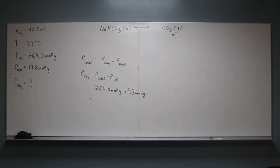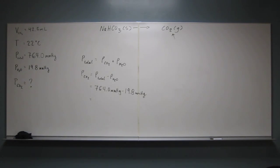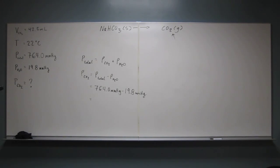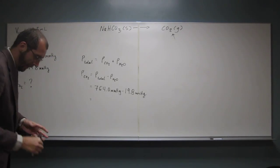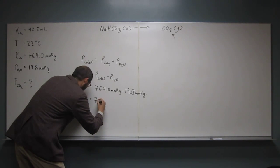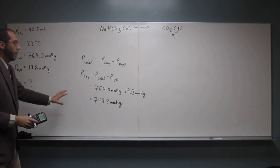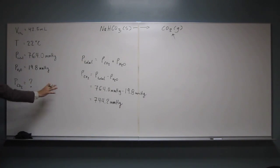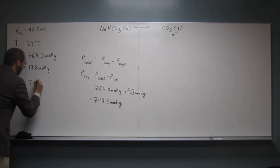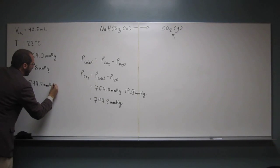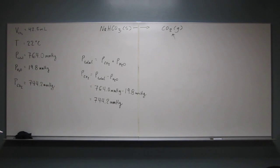Let's get our calculators out and do this problem. 764 minus 19.8 gives us 744.2 mmHg. So that's the partial pressure of carbon dioxide — that's what we're interested in. Now, remember the problem is asking for the volume at standard temperature and pressure. STP is zero degrees Celsius and 1 atm, which is 760 mmHg. We're currently at 22 degrees Celsius, and our pressure is not 1 atm.